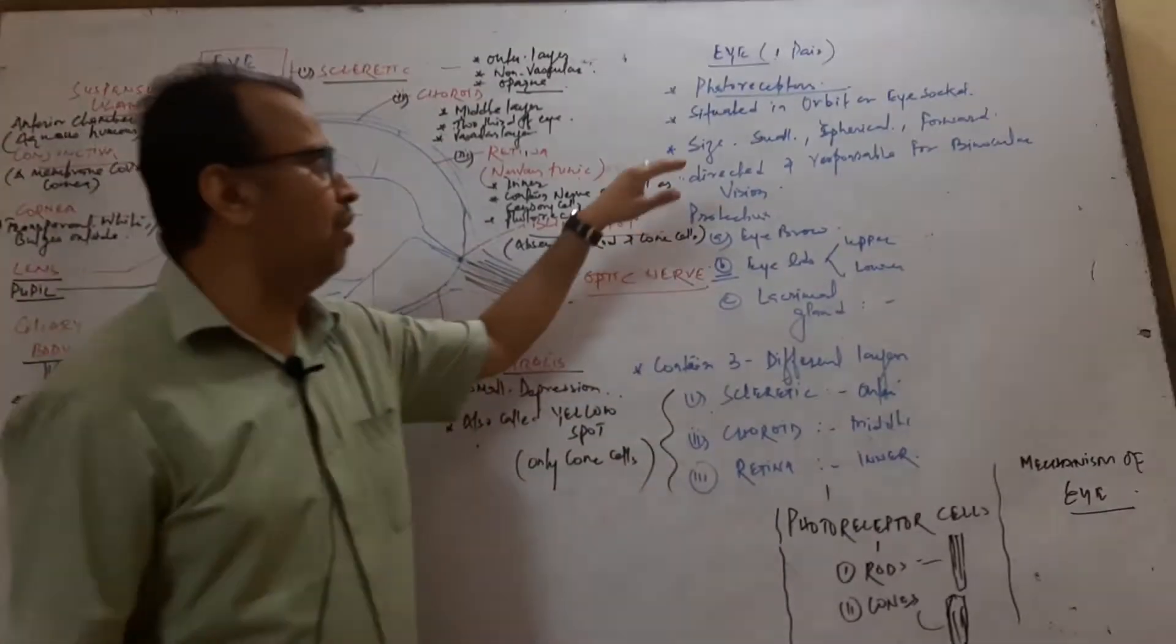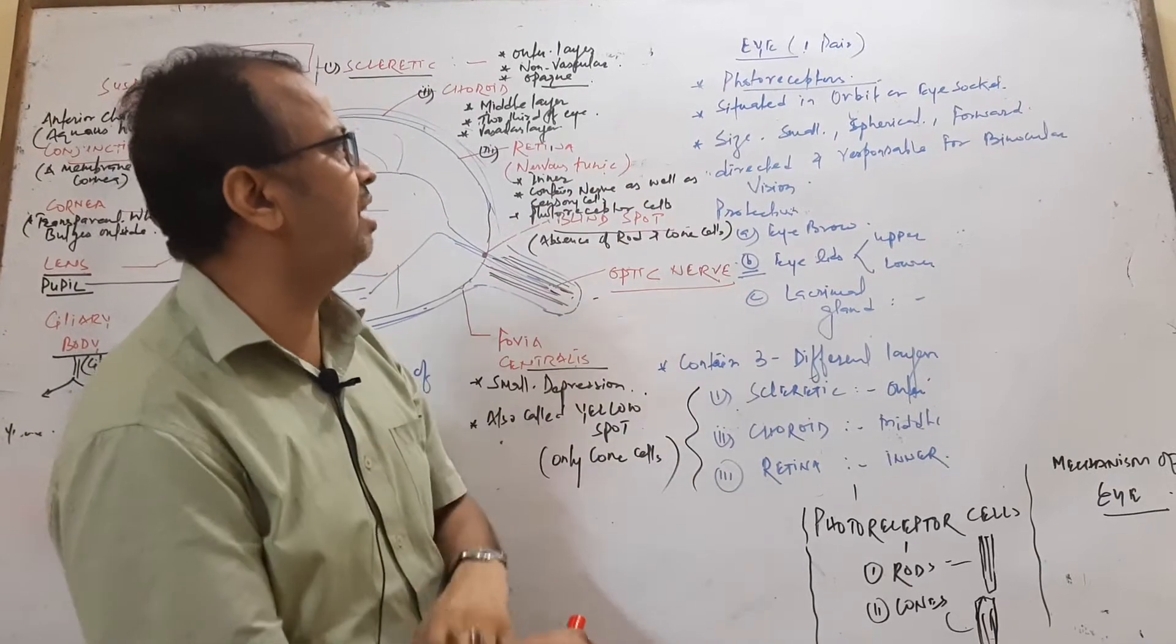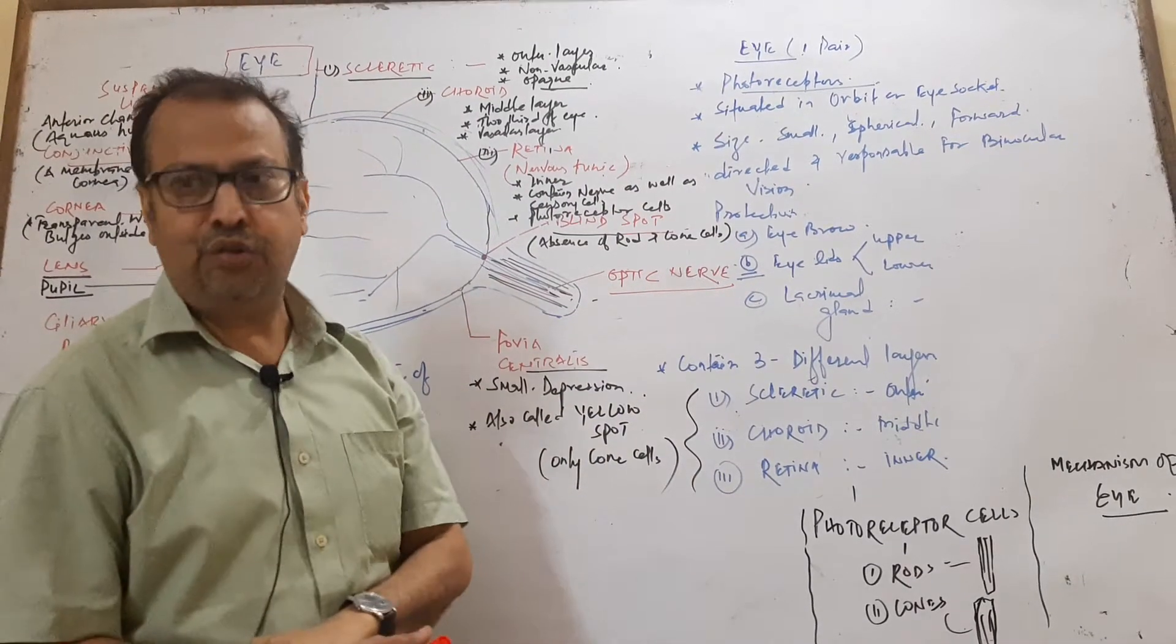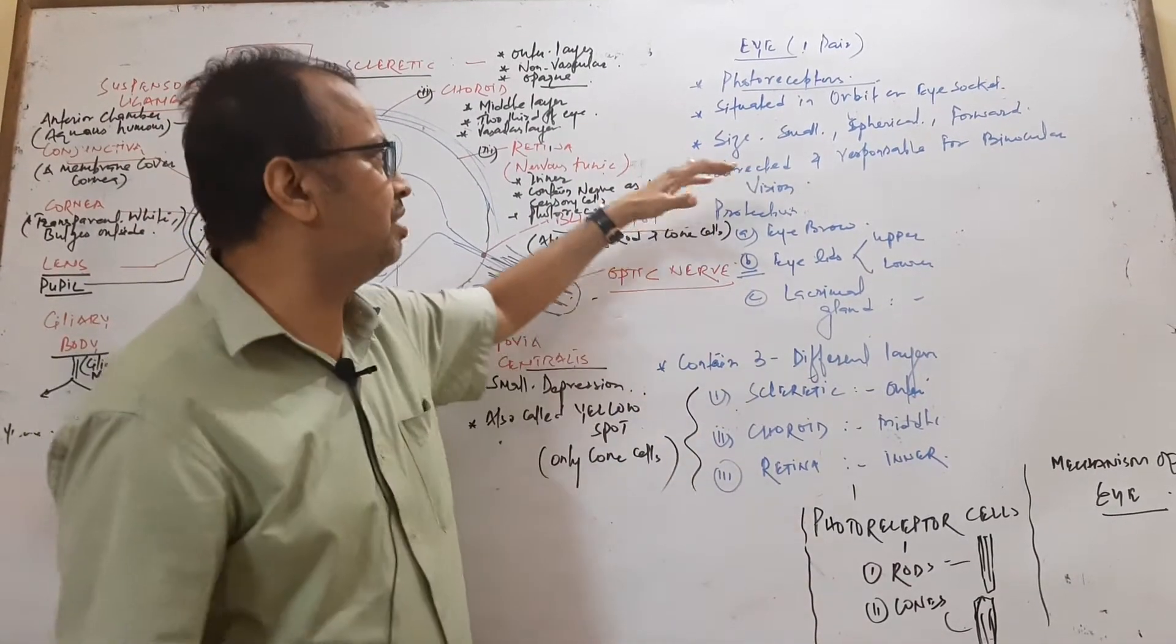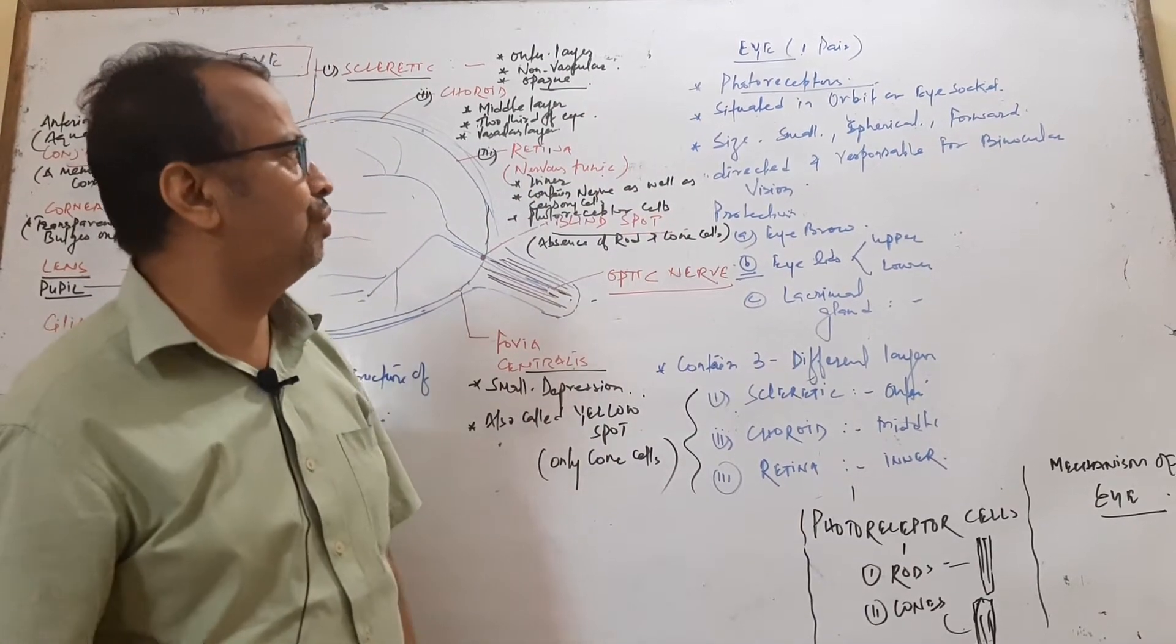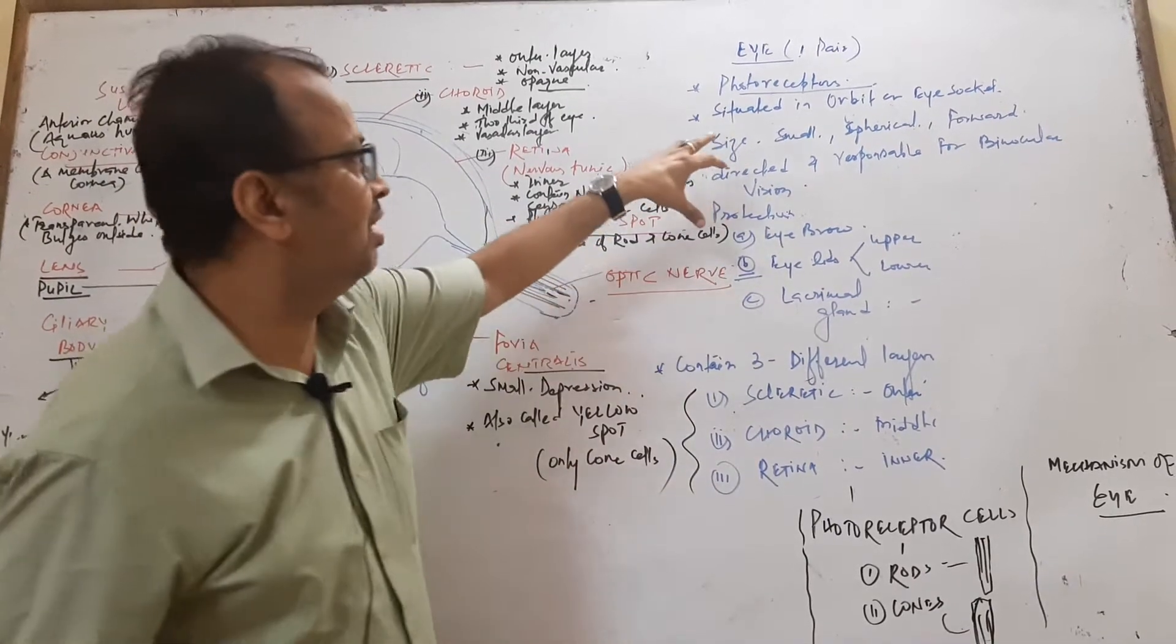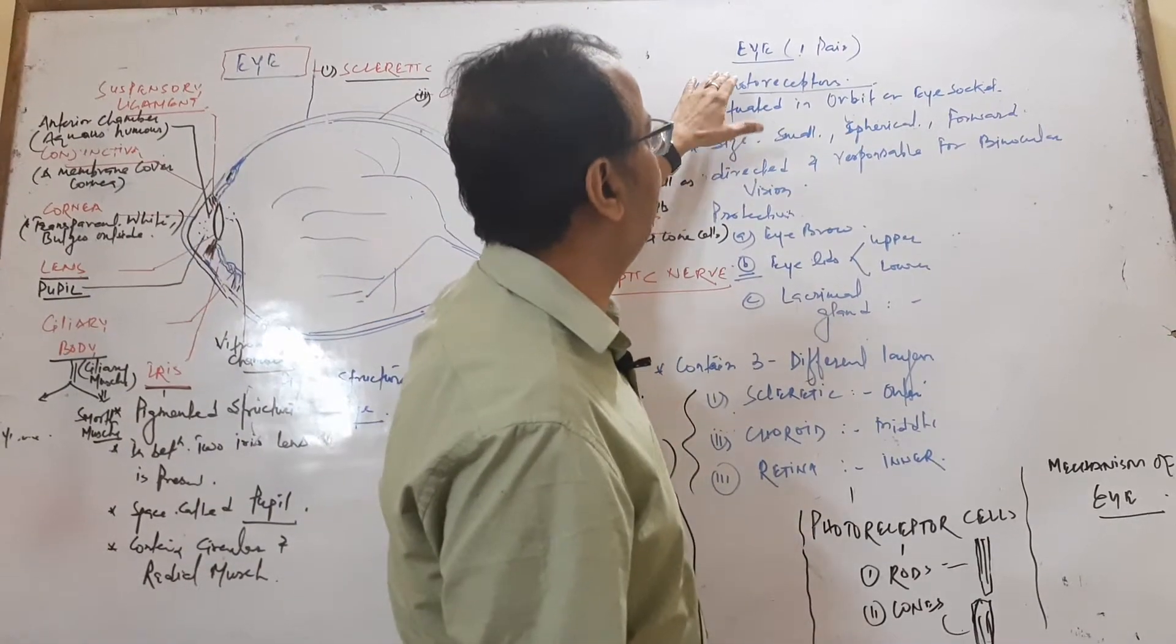Hello friends, now we are going to start one of the receptors, that is photoreceptor. Photoreceptor is responsible for visual activity. A person who can see does so through the visual receptor. One of the visual receptors is the eye.